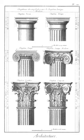Prostyle: free standing columns that are widely spaced apart in a row. The term is often used as an adjective when referring to a portico which projects from the main structure.